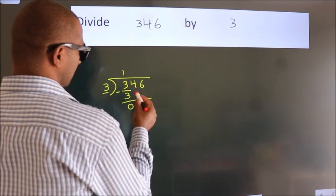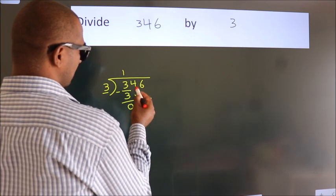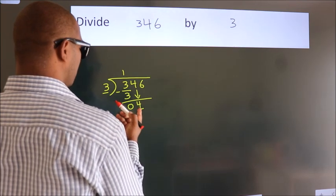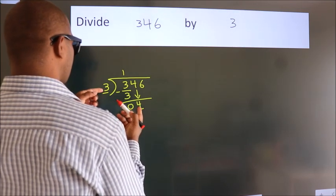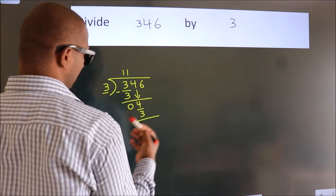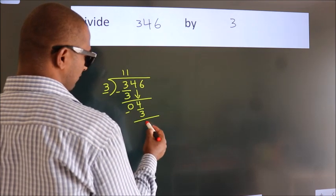After this, bring down the beside number, so 4 down. So 4. A number close to 4 in 3 table is 3 once, 3. Now, we subtract, we get 1.